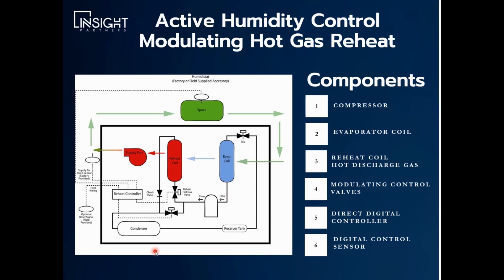So if you look at this diagram here, there's a reheat coil here. If you take out this reheat coil and look at what's going on, you have the basic four components of any refrigeration system. So you have your compressor here, your condenser, TXV, and your evaporator coil. Every refrigeration system has these four basic components.